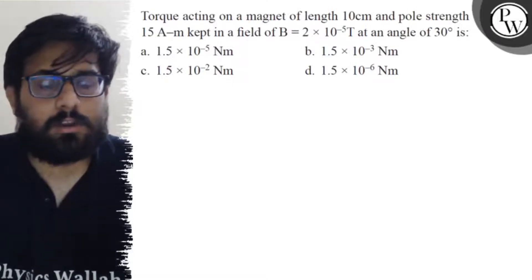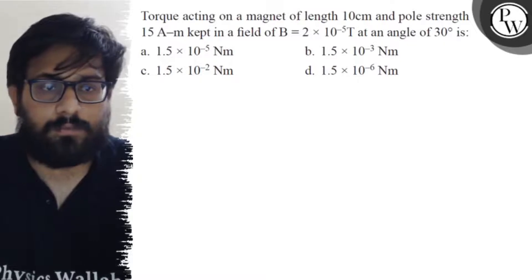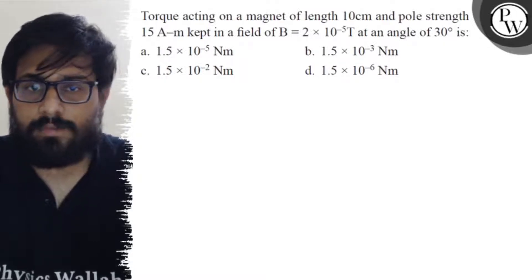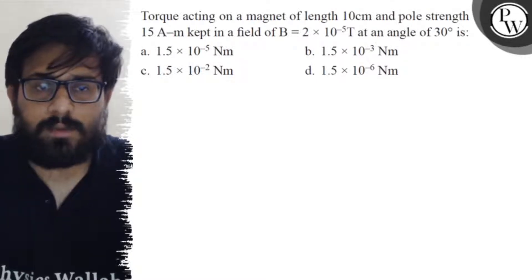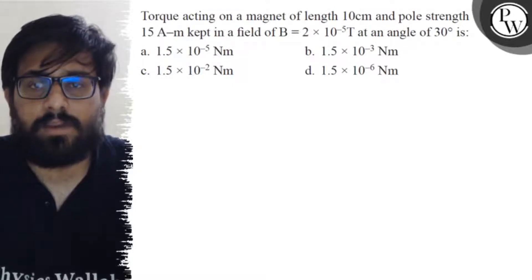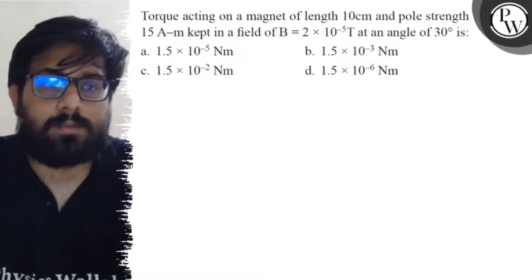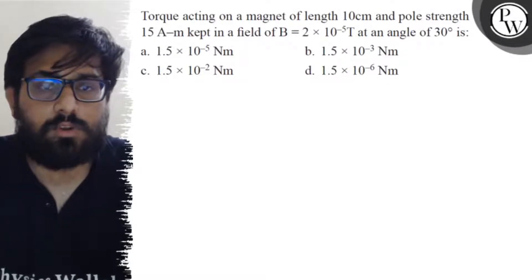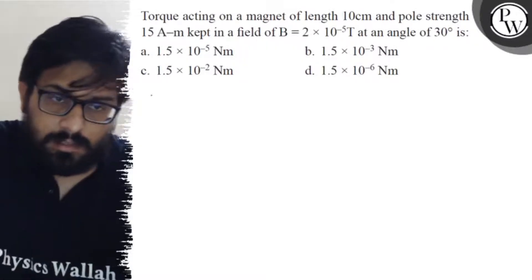Hello viewers, let's see the question. Torque acting on a magnet of length 10 centimeters and pole strength of 15 ampere meter, kept in a field of 2 into 10 to the minus 5 tesla at an angle of 30 degrees. The first option says 1.5 into 10 to the minus 5 newton meter. Second option says 1.5 into 10 to the minus 3 newton meter. Third option says 1.5 into 10 to the minus 2 newton meter, and the fourth option says 1.5 into 10 to the minus 6 newton meter.